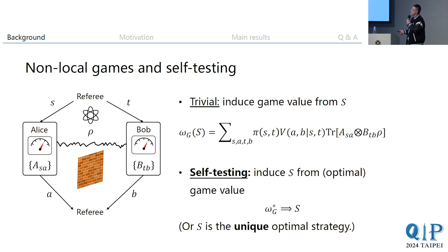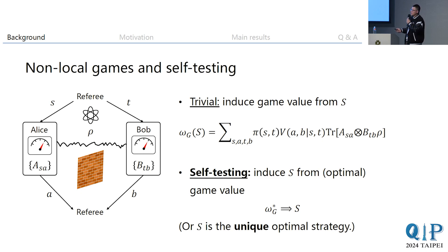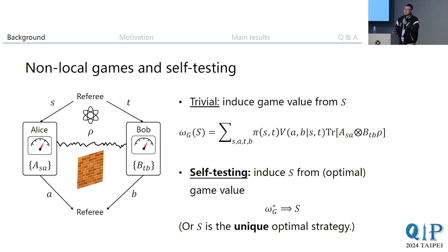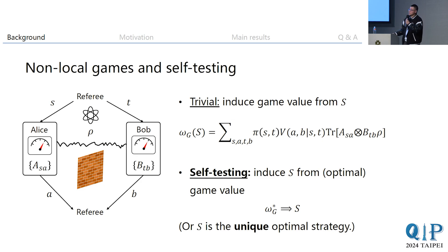In this scenario it is trivial to compute the game value from the strategy by a straightforward formula. But in self-testing we want to do the inverse process: we want to deduce the underlying quantum strategy merely from the game value observable by the referee. In other words, we say strategy S is the unique strategy that can produce this game value, and here we only consider optimal or maximum game value.